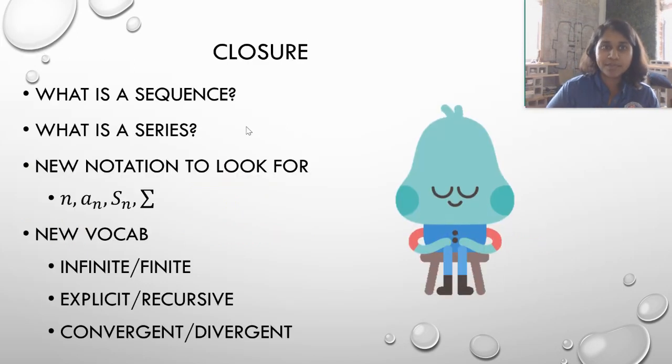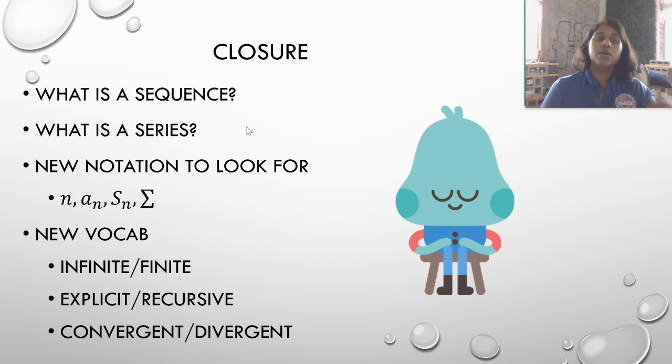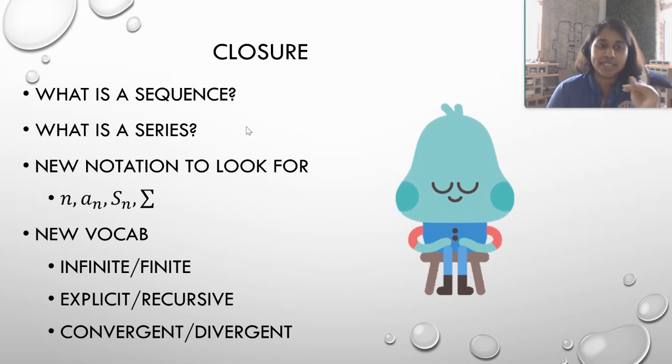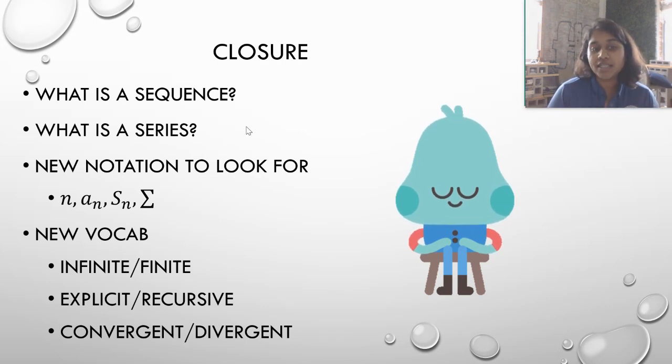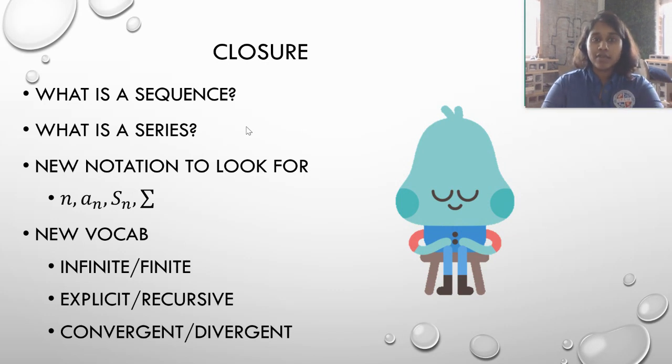All righty. So that was all I've got for you guys. Hopefully you understood what a sequence was, what a series is, the sum of the sequence. We learned a new notation. N stands for the term number. A sub n is the sequence of that term. So a sub 4 would be the fourth term of that sequence. S sub n would be the partial sum. And then just simply sigma is the sum, depending on what they tell you, you have to look at the information. New vocab: infinite versus finite, explicit versus recursive, and convergent versus divergent. That's all I've got for you guys.